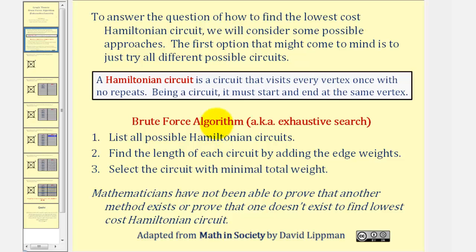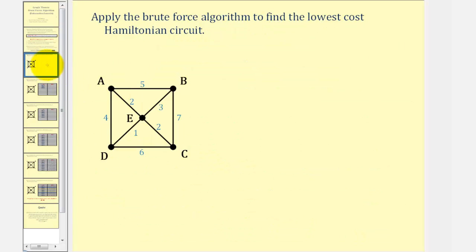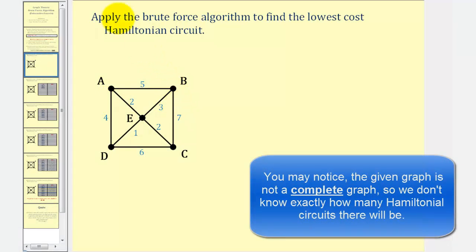While this algorithm does seem very basic, mathematicians have not been able to prove that another method exists, or prove that one doesn't exist, to find the lowest cost Hamiltonian circuit. Let's take a look at an example. We want to apply the brute force algorithm to find the lowest cost Hamiltonian circuit. It doesn't matter which vertex we begin at, but to keep things organized, let's begin at vertex A.